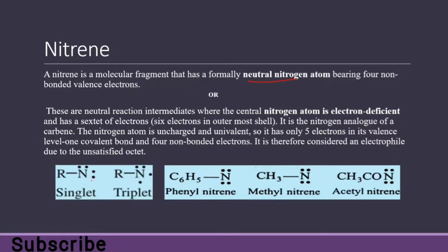If both electrons are in the same orbital, it is known as singlet nitrine. We calculate it using the degeneracy formula 2S+1. If the electrons are present in different orbitals with the same spin, we call it triplet nitrine, also calculated through the degeneracy formula 2S+1, which we studied during the carbene lecture.